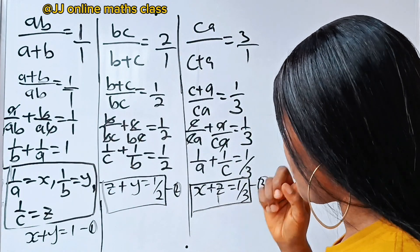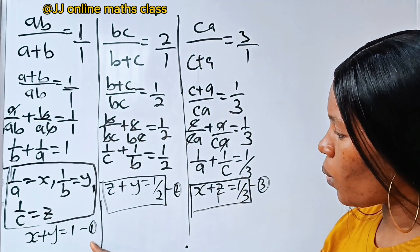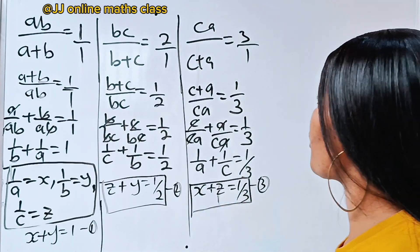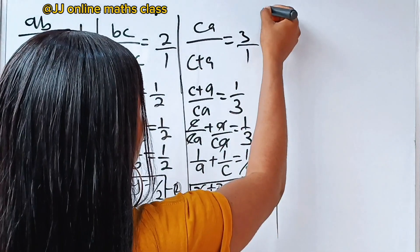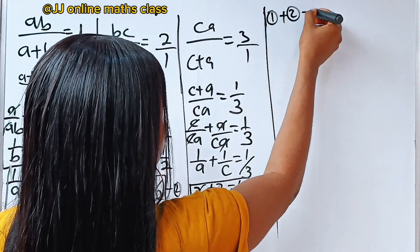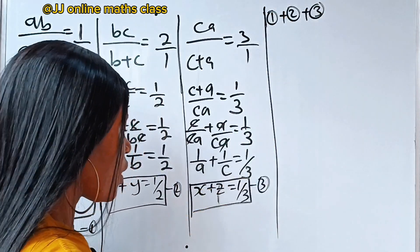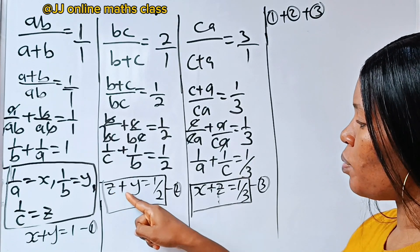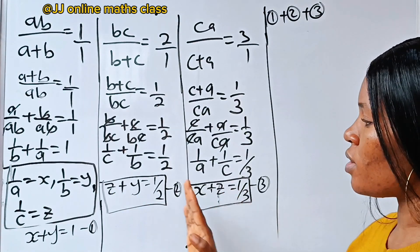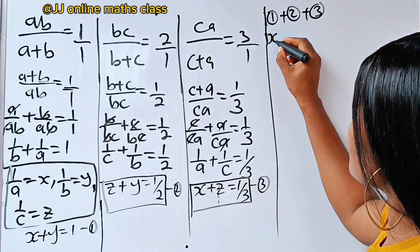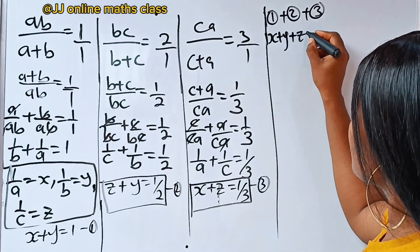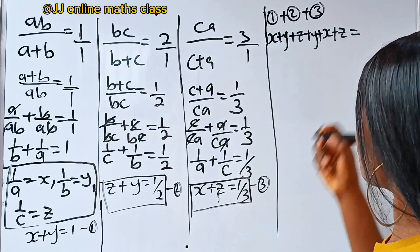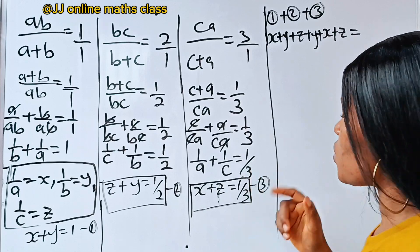Now let's continue. We are going to add equation 1, equation 2, and equation 3 together. So the left-hand side will be x plus y plus z plus y plus x plus z.